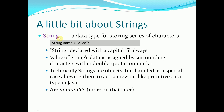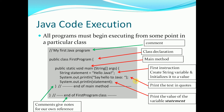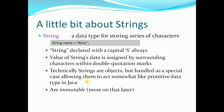Finally we have something called a string. A string is technically an object, but a lot of times it is also referred to in the same context as the primitive data types — it's a data type for storing a series of characters. For example, we can have a string called name where we assign Alice. Strings are always declared with a capital S, whereas the previous ones we saw all have lowercase. The value of a string is assigned using surrounding double quotation marks. These strings are a special case of objects that make them act somewhat like primitive data types in Java, and they are also immutable, which we'll get into a little bit later.